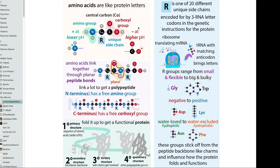These amino acids are linked together in an order specified by the mRNA. The mRNA is like the protein recipe copy that's made from the DNA instructions. In the mRNA, you have three-letter words called codons. Each codon corresponds to an anticodon, which is the complementary sequence sticking off from a molecule called a tRNA.